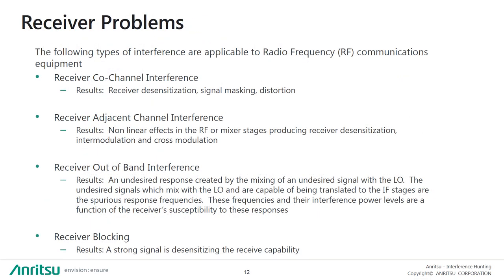Let's look at how interference affects receivers in RF communication equipment. The interference is quite often caused by transmitters, but can also be due to limitations in the design of receivers. You can divide the effects on receivers into four main categories: co-channel interference, when the source and victim are on the same radio channel; adjacent channel interference, when on adjacent channels; out-of-band interference, when the source is outside the frequency band of the victim; and lastly, receiver blocking, when a strong nearby signal desensitizes the receive capability.